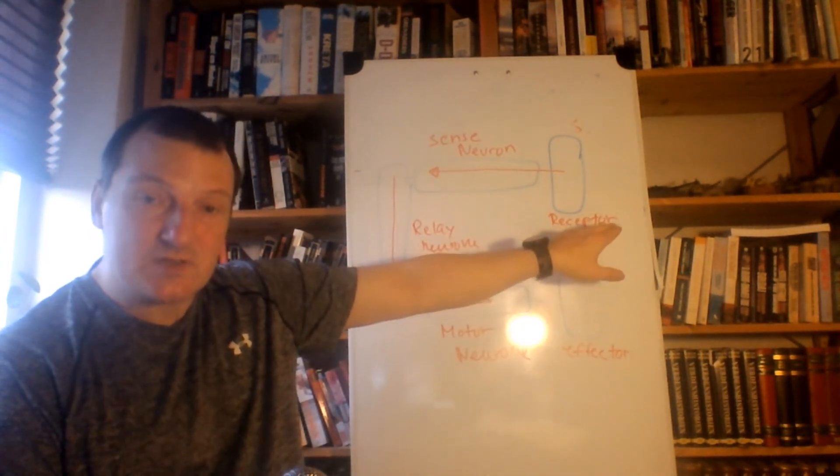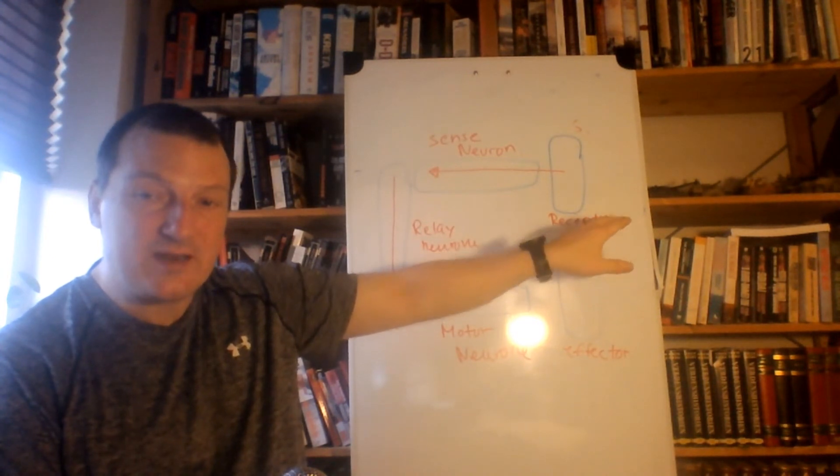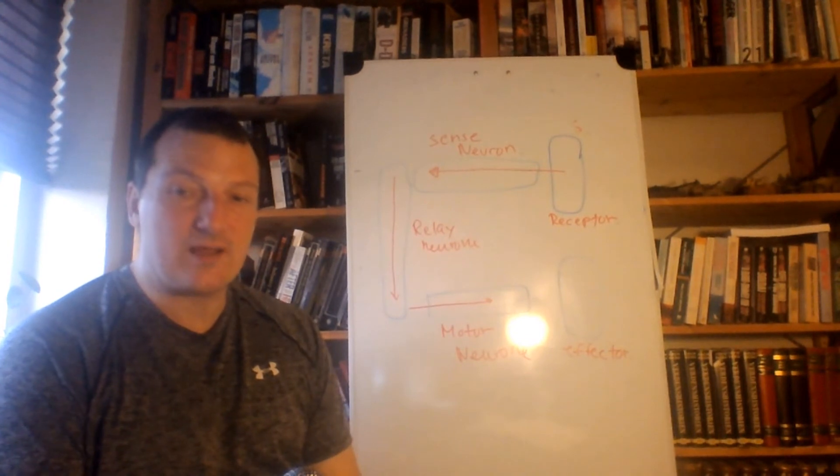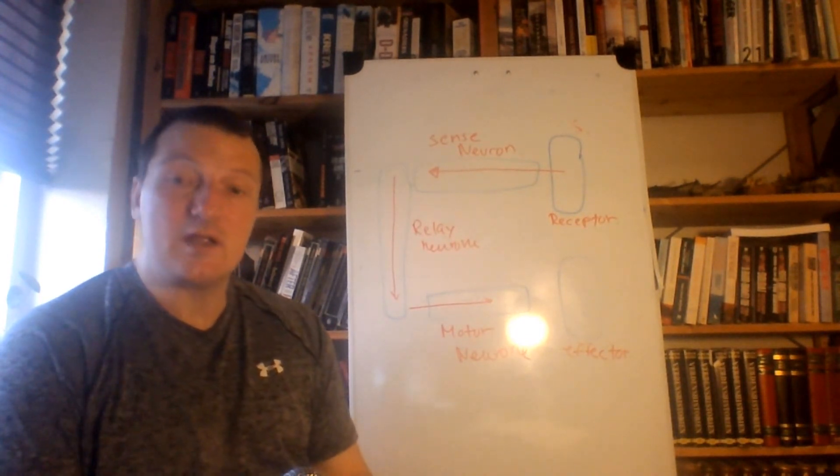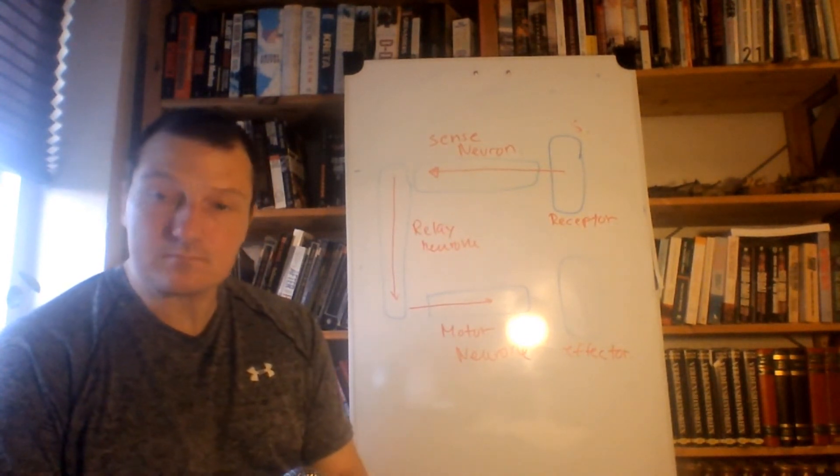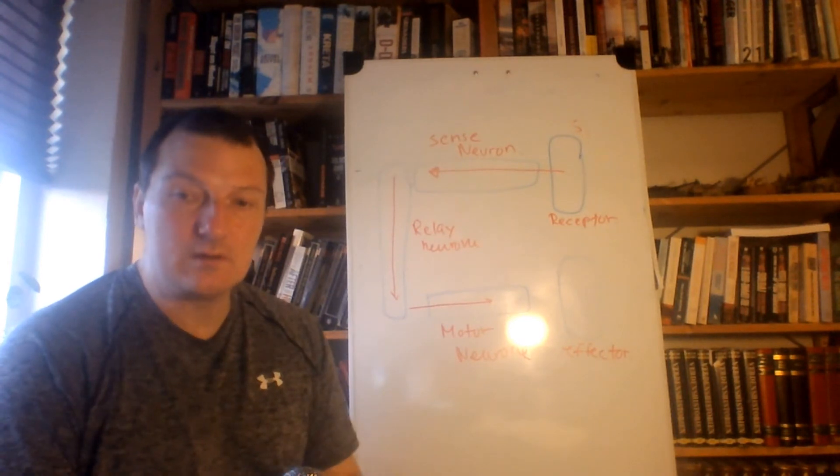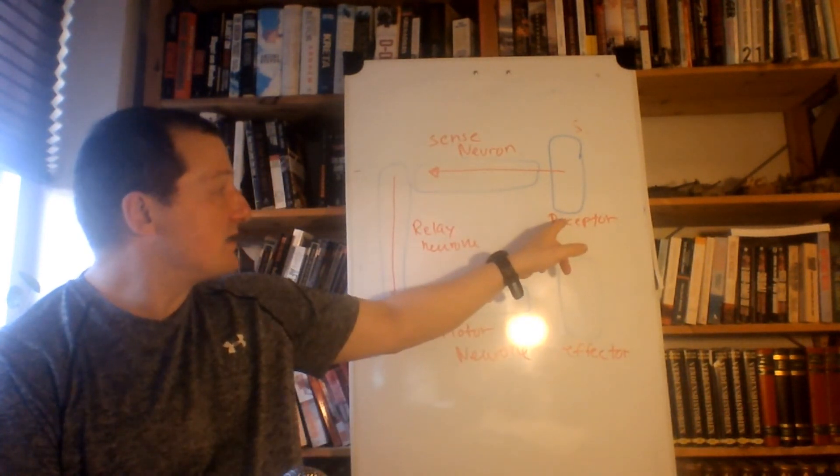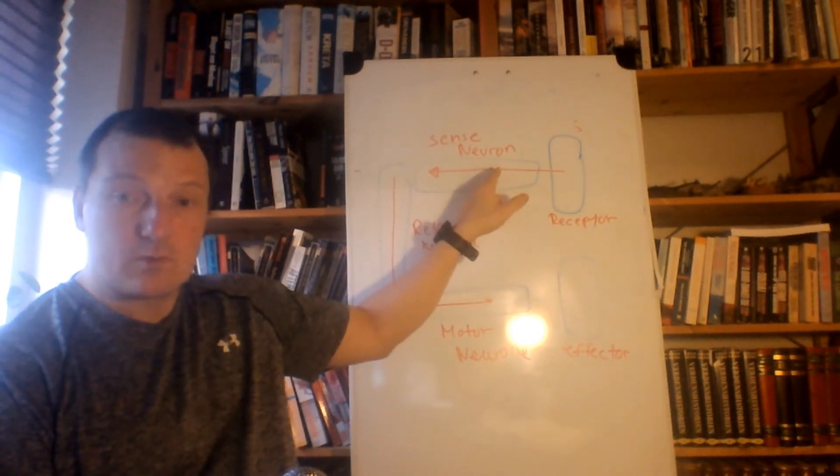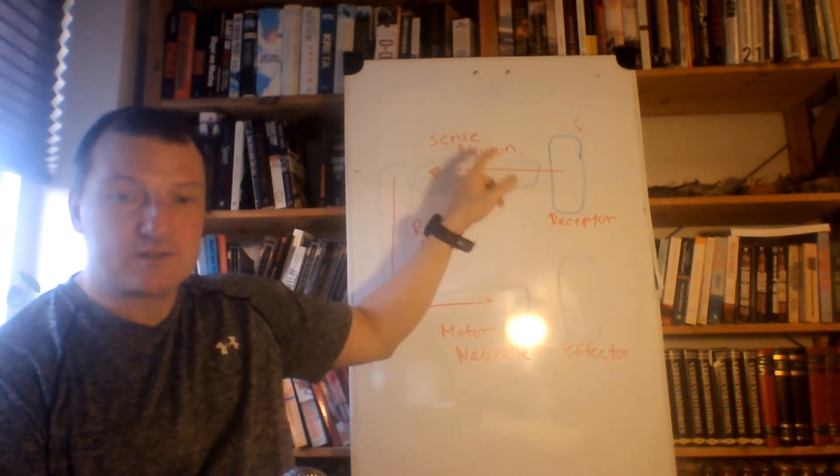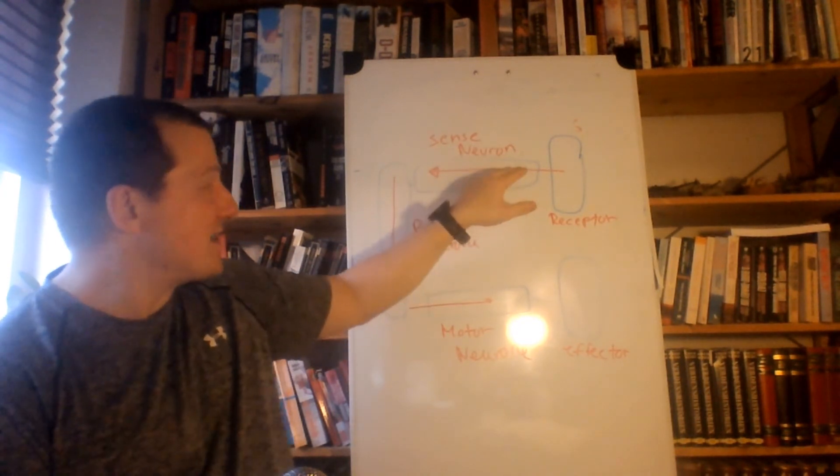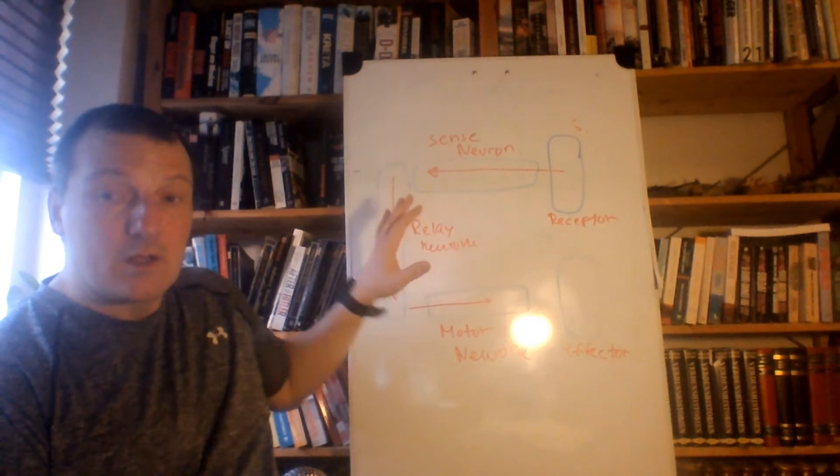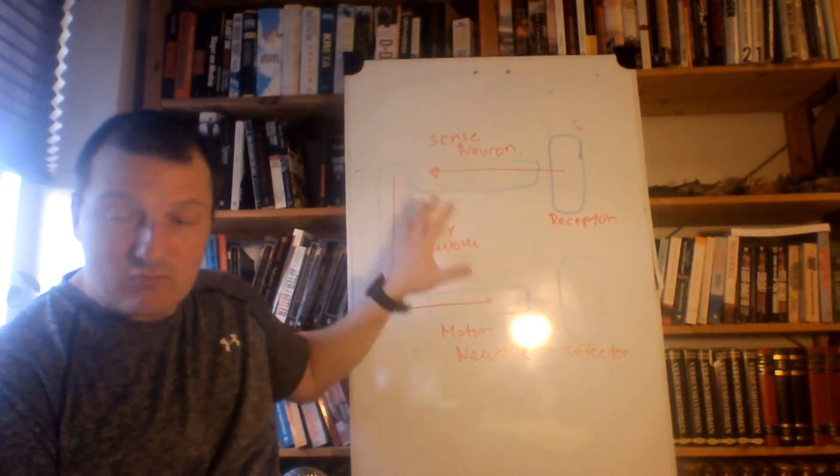There are receptors in your skin that will immediately start feeling, okay, something's wrong here, your hand is now touching the flame, that's not good. They send a signal of pain, and again all signals we feel are nerve signals. So they send a signal in here to the sensory neuron, which then senses okay, this is way too hot, something is happening.